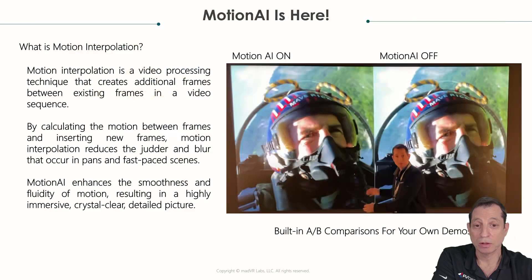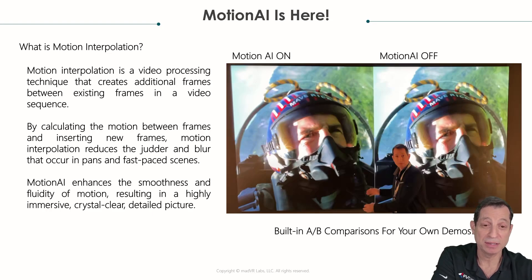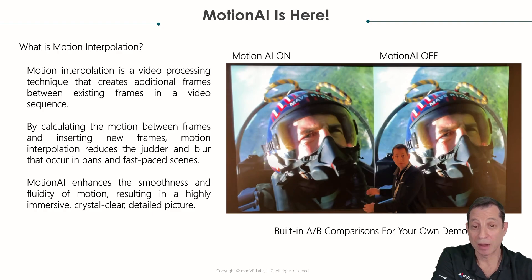Let's move along and talk about Motion AI. For those not familiar, motion interpolation is the art of adding frames where there are none. Many people dislike it because of past implementations. The main problem is that it can introduce motion artifacts — basically creating problems while trying to solve another — which are distracting and lead people to turn it off.